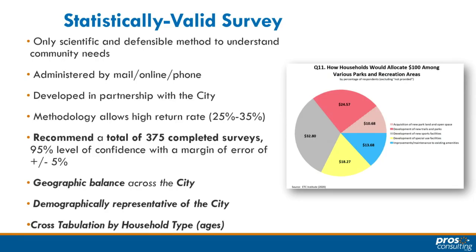Regarding the statistically valid survey, this is very algorithm-based and we expect this to take place in the spring — March, April, and May. We're going to get a minimum of 375 completed surveys from 375 different households.